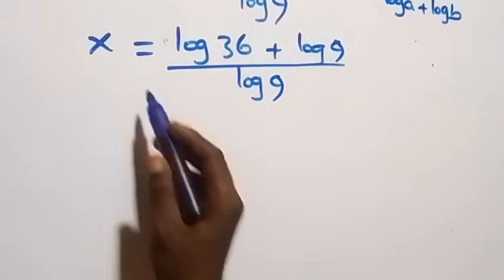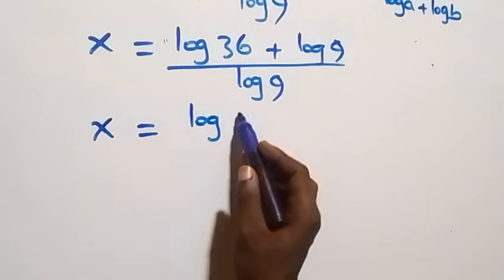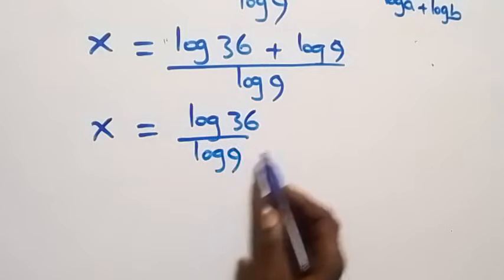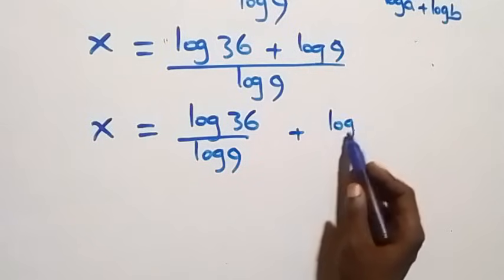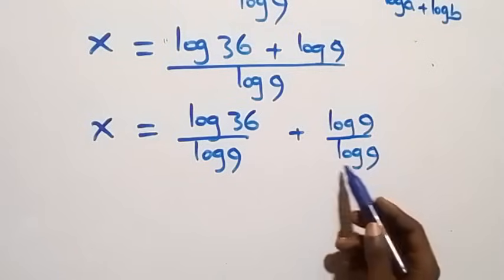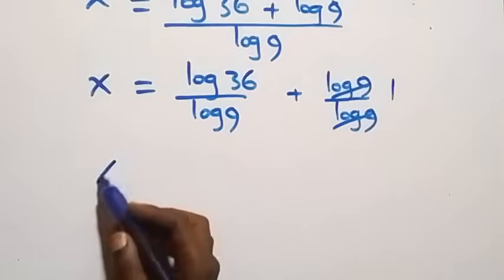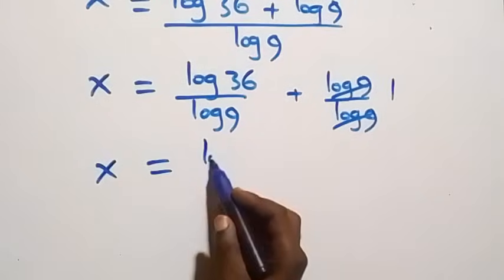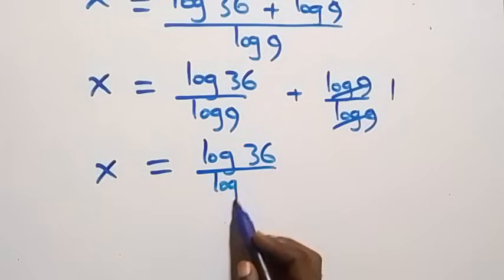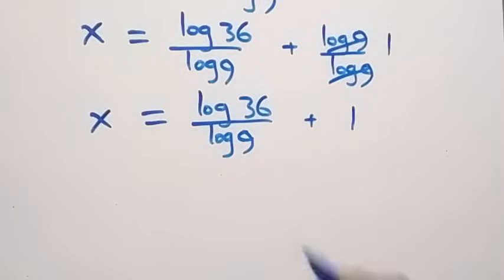We separate this into two fractions: x equals log 36 over log 9, plus log 9 over log 9. Here log 9 cancels with itself and becomes 1, so we have x equals log 36 over log 9, plus 1.